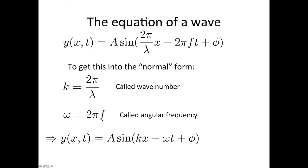And 2π f is called the angular frequency, omega. When we come across circular motion, you're going to see that again — this is going to continue to be an important relationship. Using these two definitions, we can simplify the equation to: y is equal to A times sine of (kx minus omega t plus phi).